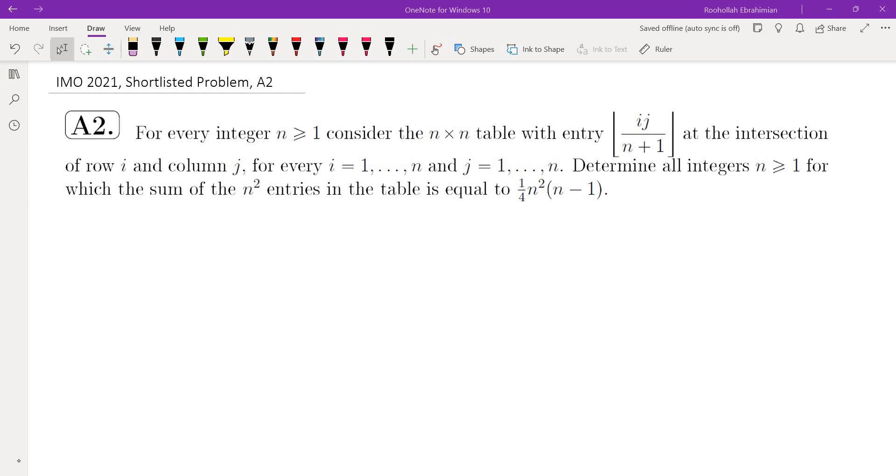Hello, in this video we're going to go over a problem from IMO 2021. This was a shortlisted problem which means it was proposed to appear in the IMO International Mathematics Olympiad, but it didn't quite make it. This is problem A2, which means it's an algebra problem.